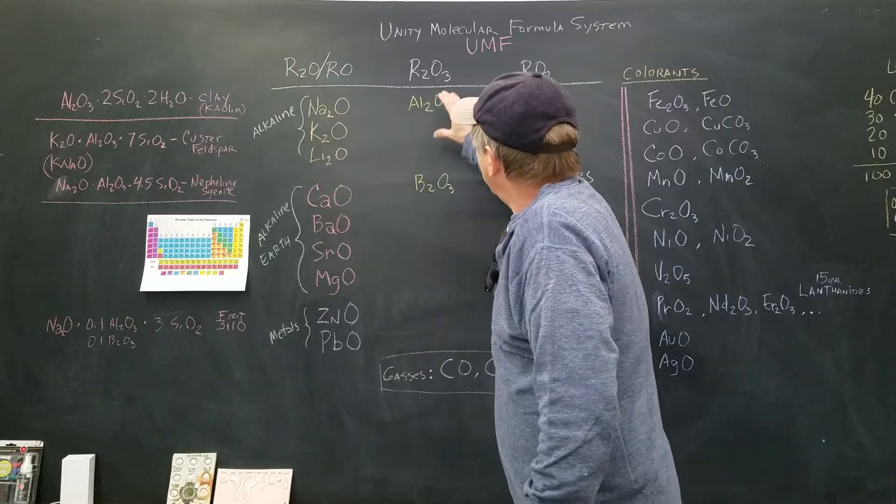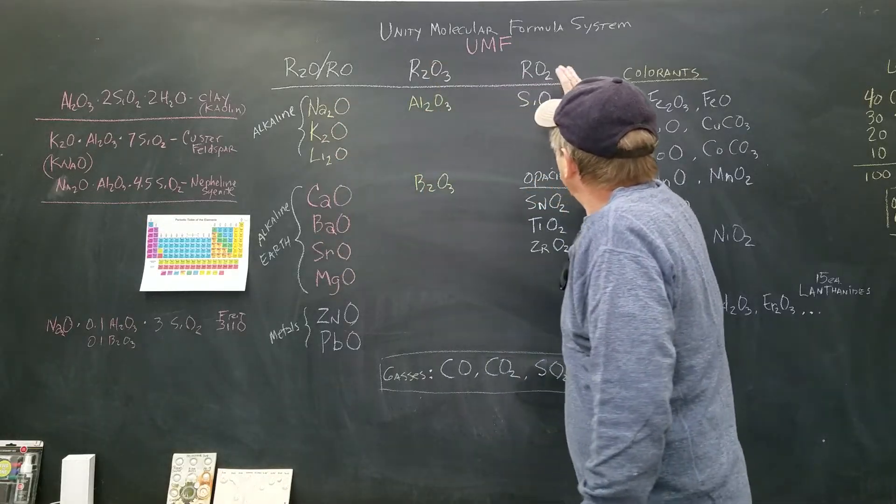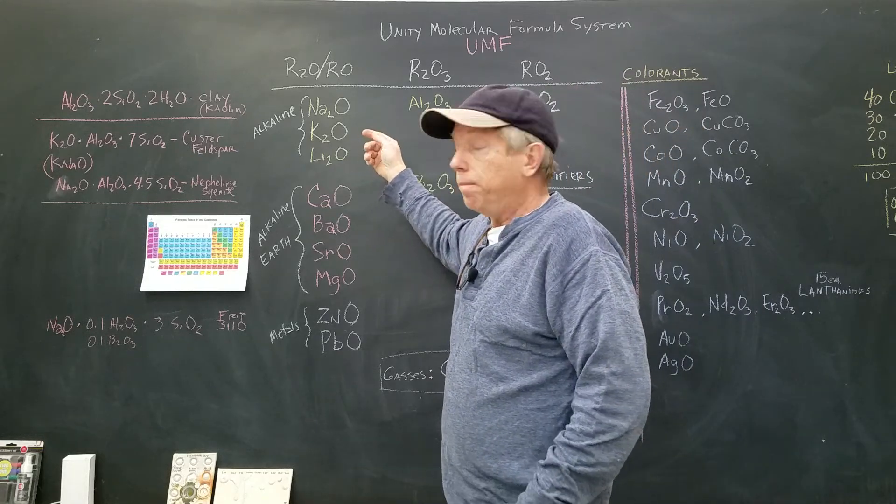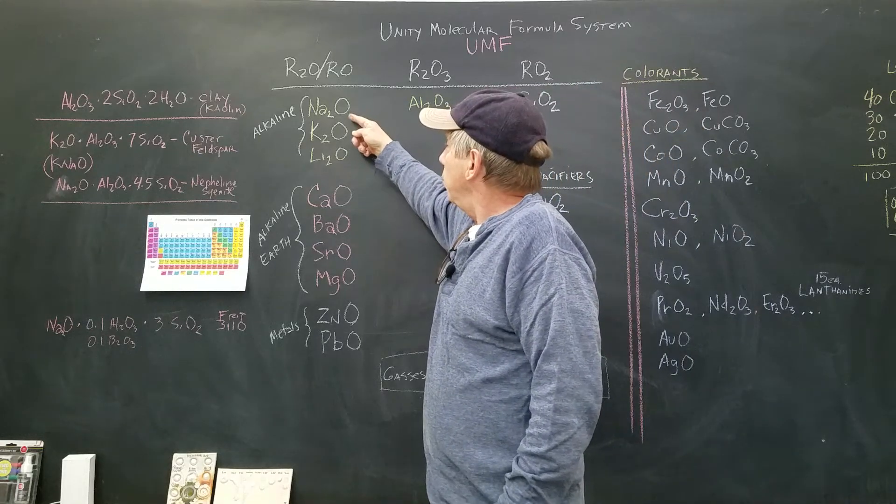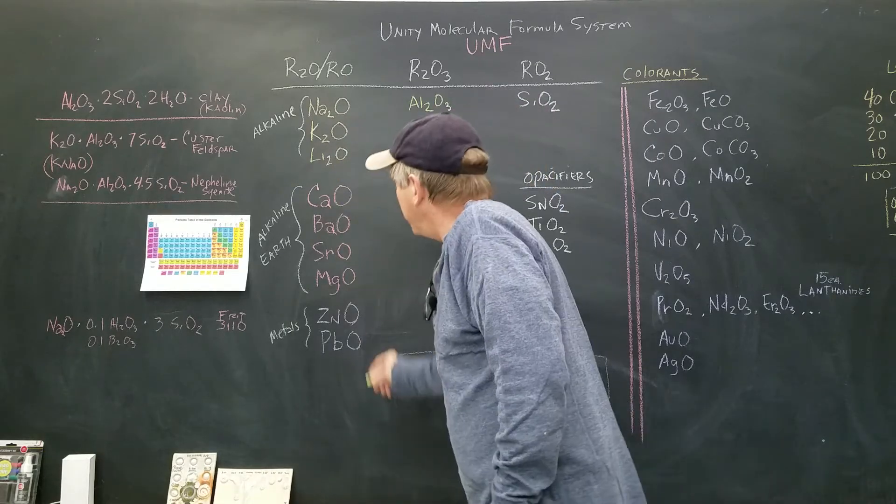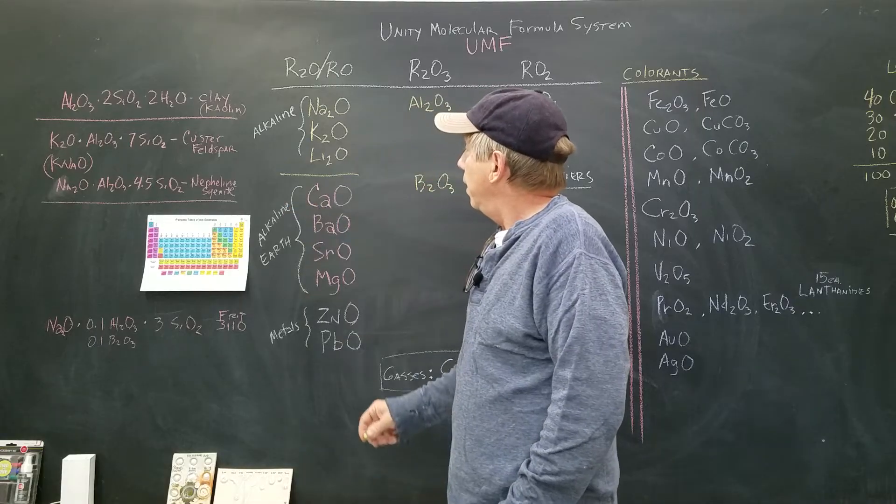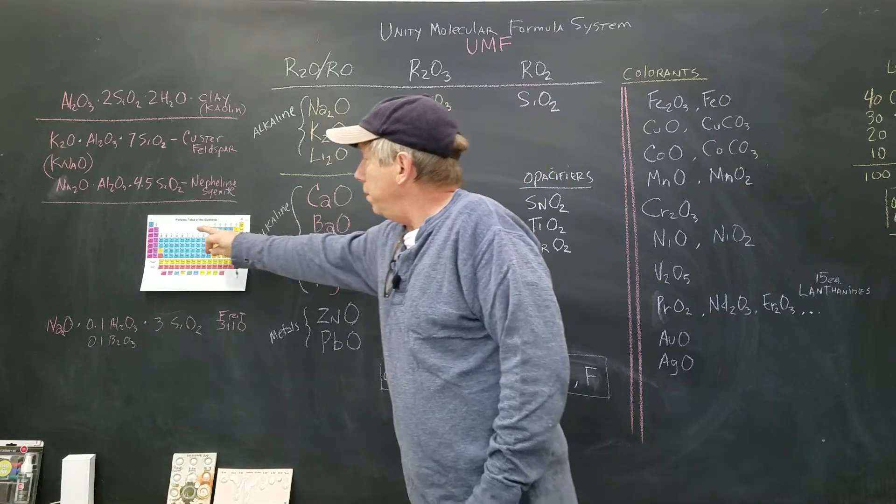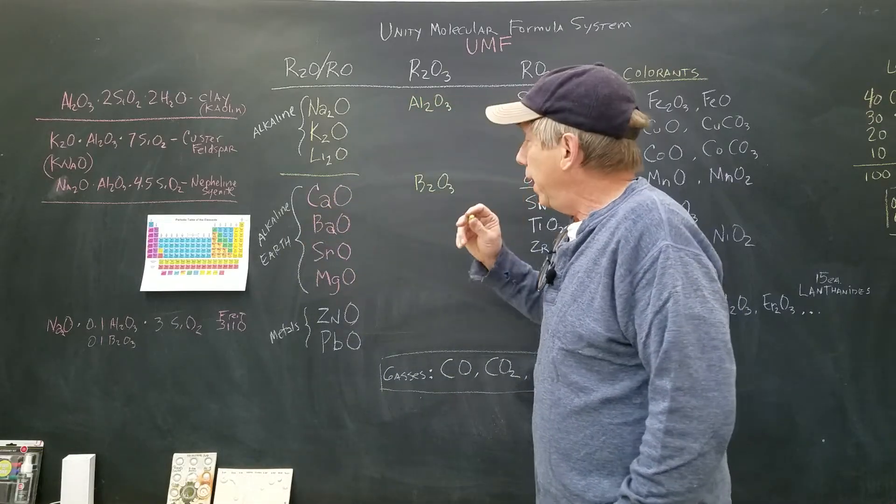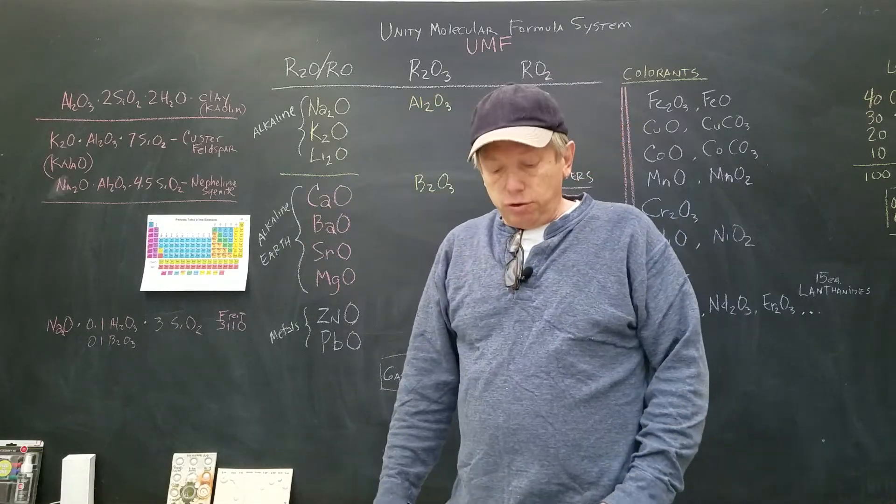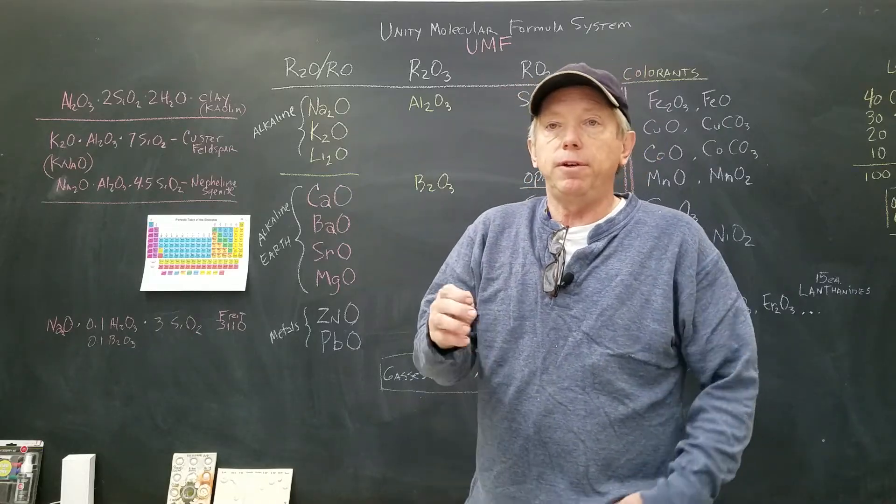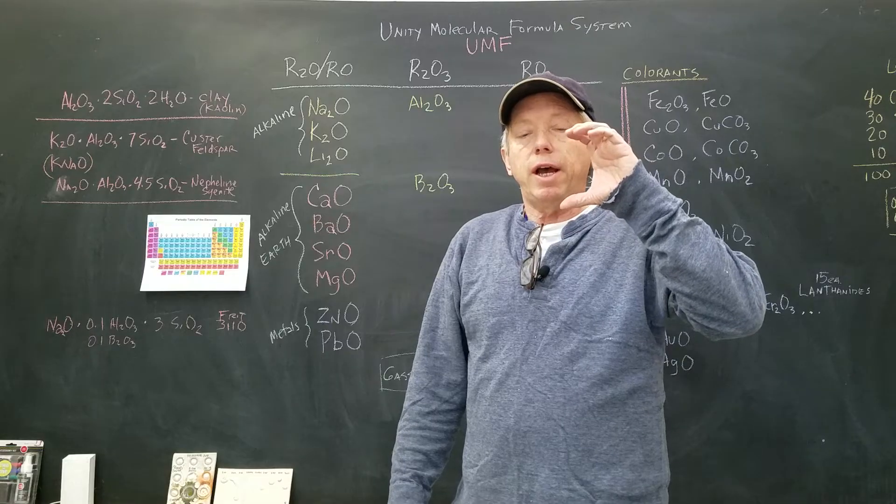What he put in this column was sodium, so we have Na2O, K2O, Li2O. These are all called alkaline oxides and they're in the periodic table in this first column—the alkaline column. The reason he could use the periodic table is it had been developed in about 1850.